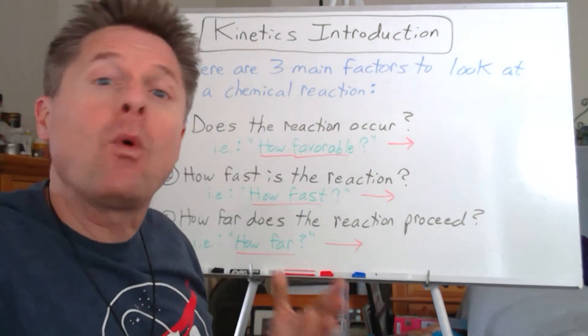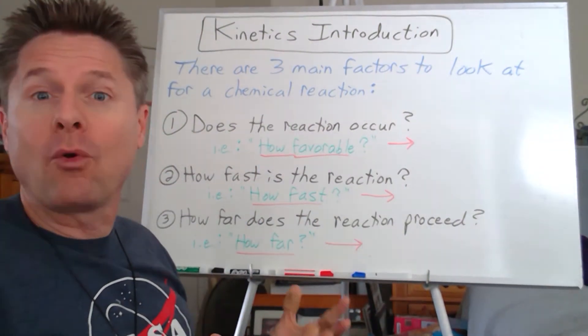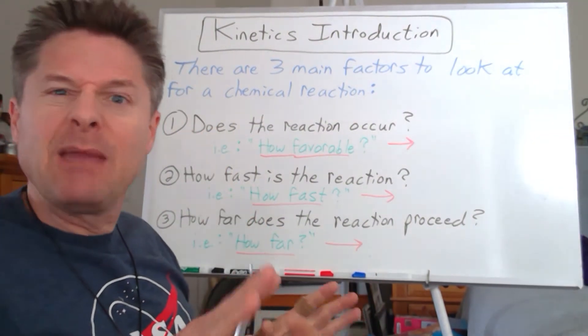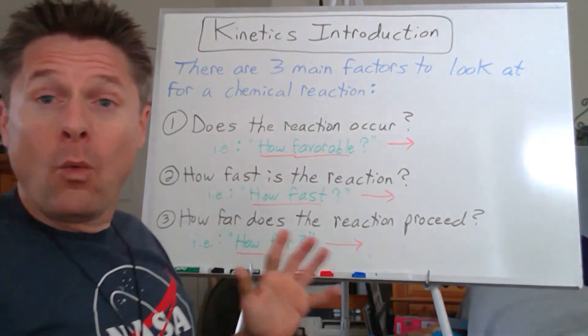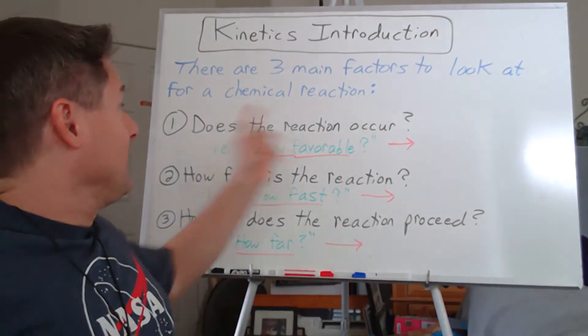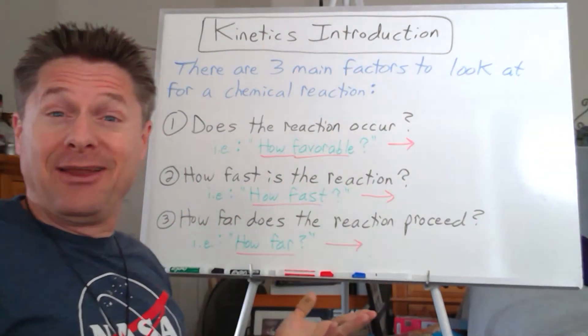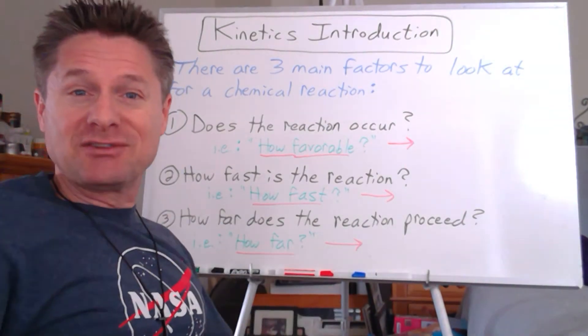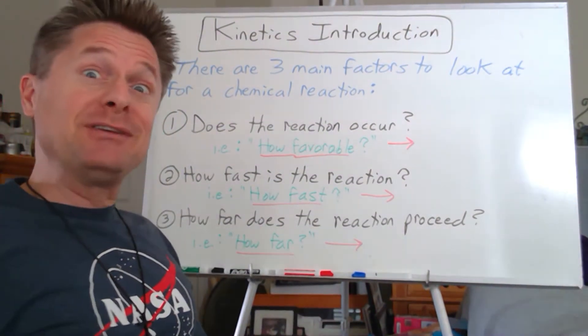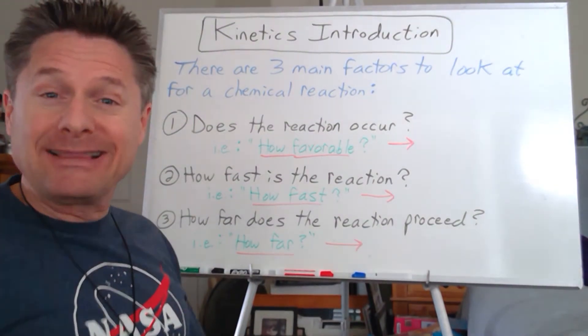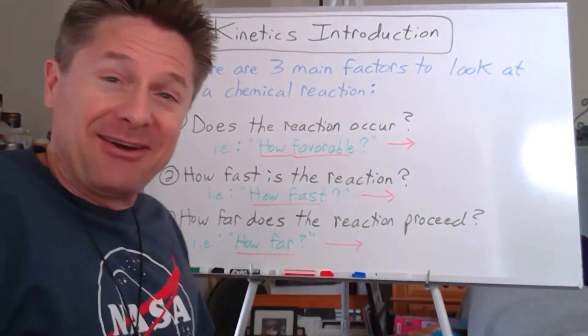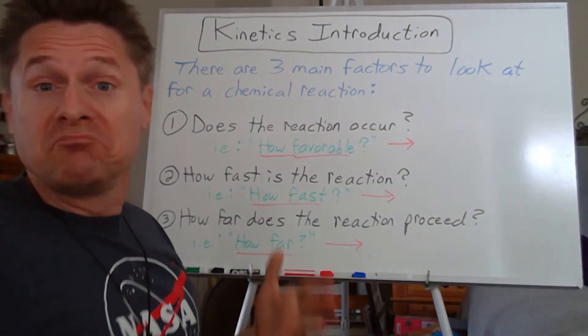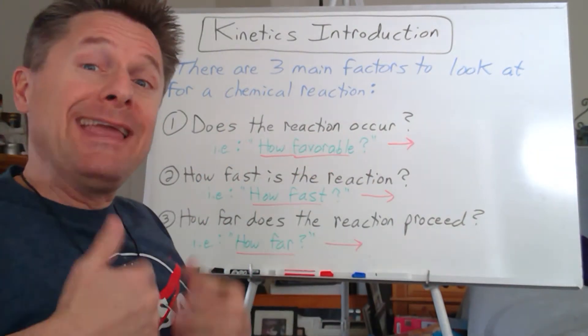There's three main factors or questions you could ask yourself. Say you're in a laboratory with some new chemical reaction. The first question I would ask is: does the reaction occur? If I want to manufacture some product to sell and the reaction doesn't happen, that's probably not the smartest business move.